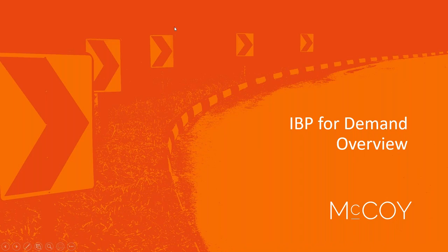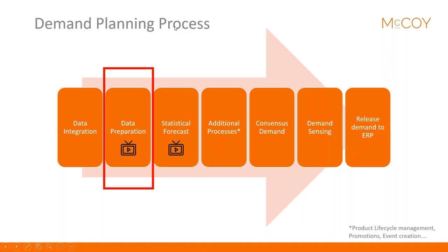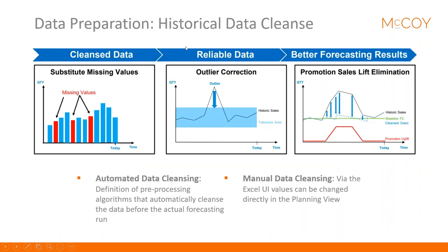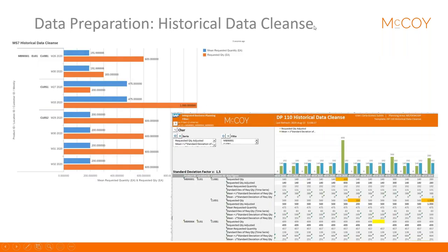In data preparation you can also cleanse your history, because it normally contains missing values, outliers, promotions, or sales uplifts that you don't want affecting your forecast calculation. You can cleanse them automatically or manually, and you can identify these outliers or missing values in the Excel user interface or via alerts.